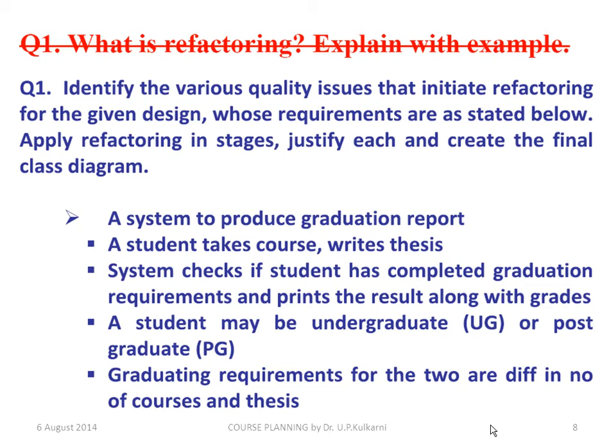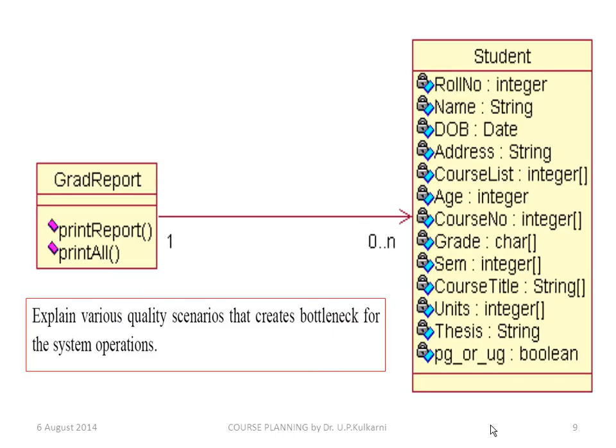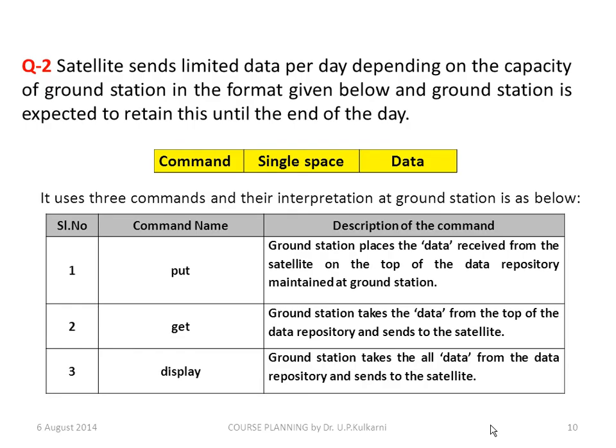Instead of asking that question, you can ask: 'Identify the various quality issues that initiate refactoring for the given design whose requirements are stated below. Apply refactoring in stages, justify each, and create the final class diagram.' Here a requirement is given and you need to refactor it — focus on solving problems and applying knowledge rather than simply memorizing and reproducing what is learned in class.